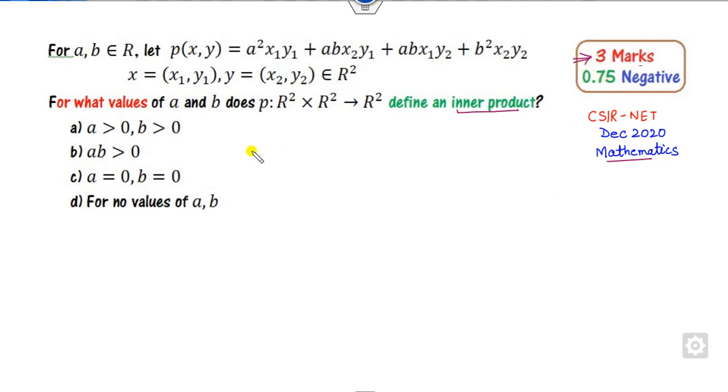The question is: if you have a matrix p(x,y) defined over the domain R² as p(x,y) = a²x₁y₁ + abx₂y₁ + abx₁y₂ + b²x₂y₂, then for what values of a and b out of these four options does this form an inner product?